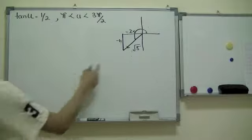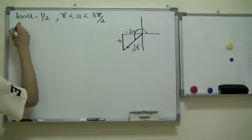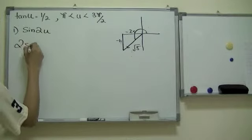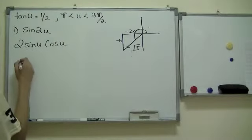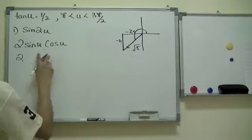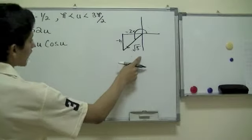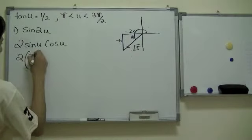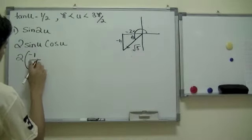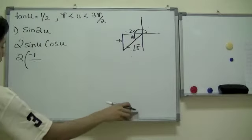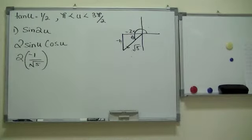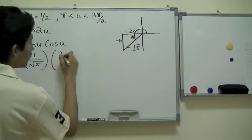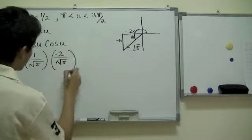We can tell that tangent of u equals 1 half from this diagram. The first thing to find is sine of 2u, which by formula can be written as 2 sine u cosine u. Sine u is opposite over hypotenuse, which is negative 1 over radical 5. Cosine u is adjacent over hypotenuse, which is negative 2 over radical 5. Then you sort this out.